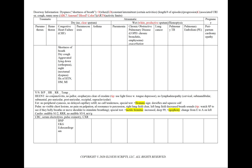For CHF, we'll add a BMP, EKG, and echocardiogram. In pneumoconiosis, we'll see shortness of breath, a dry cough, and a history of occupational exposure, such as a miner. We'll order a CT chest.